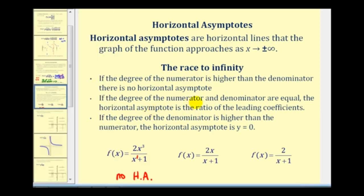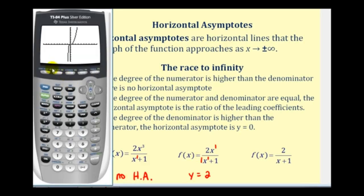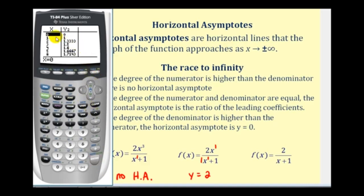If the degree of the numerator and denominator are equal, the horizontal asymptote will be the ratio of the leading coefficients. In our second example, the numerator and denominator both have degree one, and the ratio of the leading coefficients is two over one. Therefore, the equation of the horizontal asymptote is y equals two. On the graphing calculator table, as x increases we can see the y value approaching positive two.